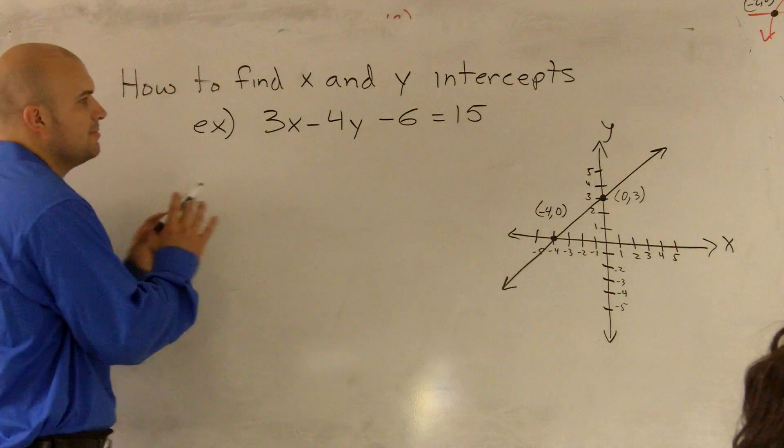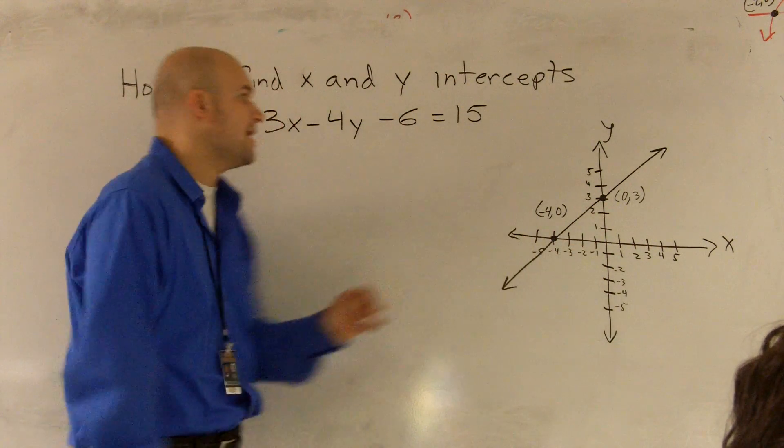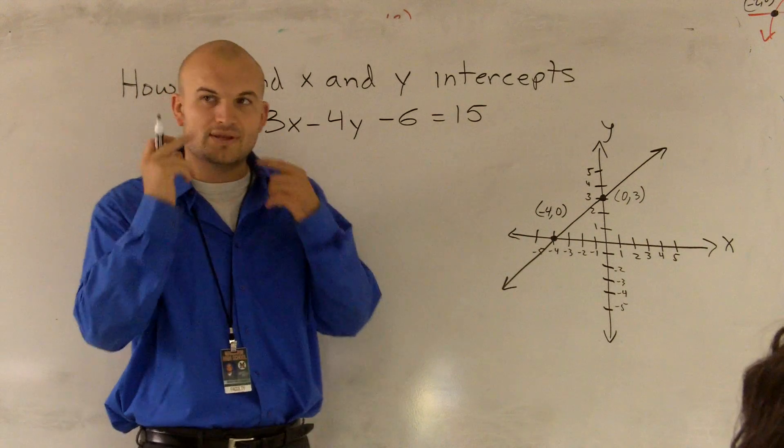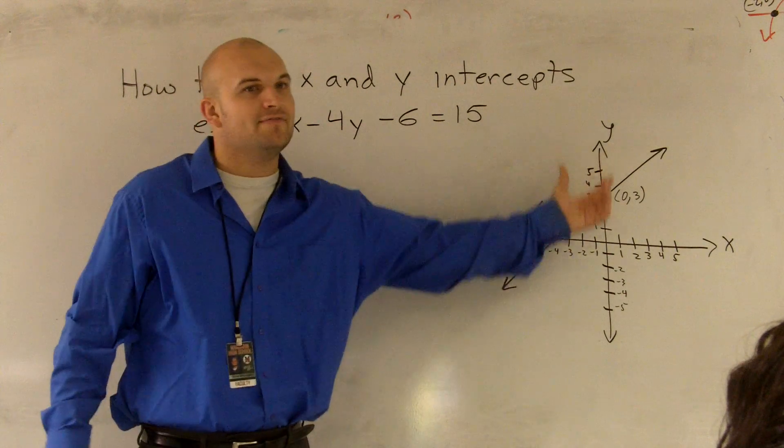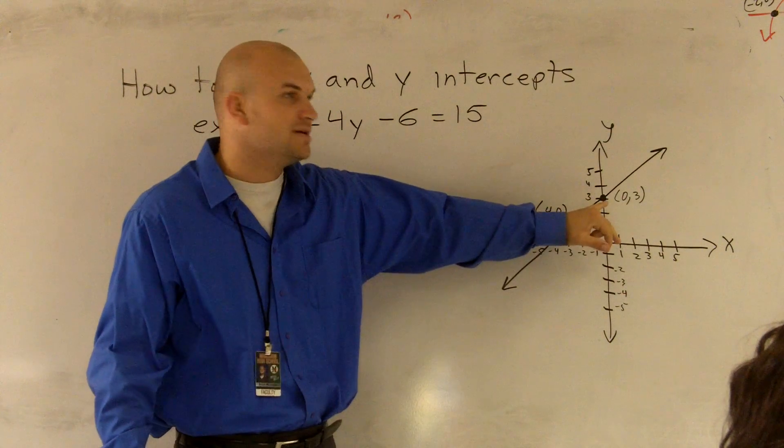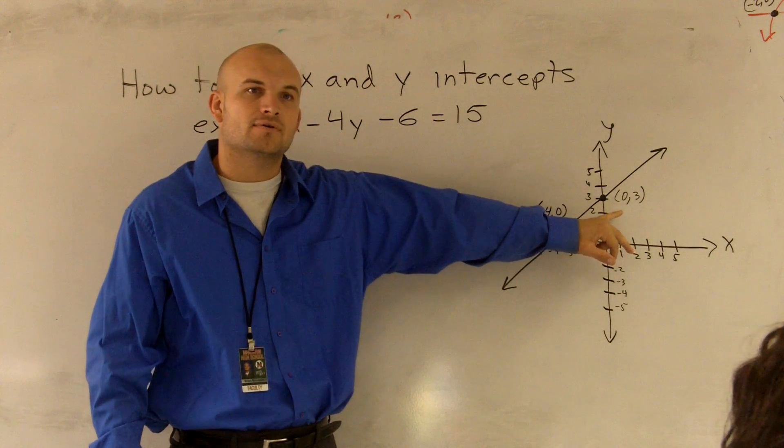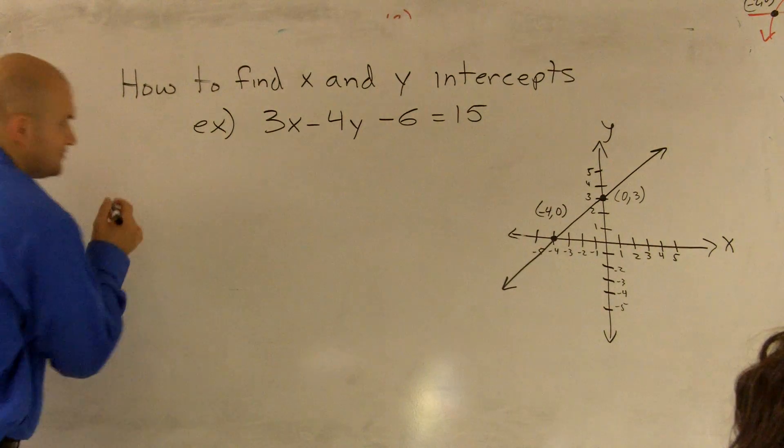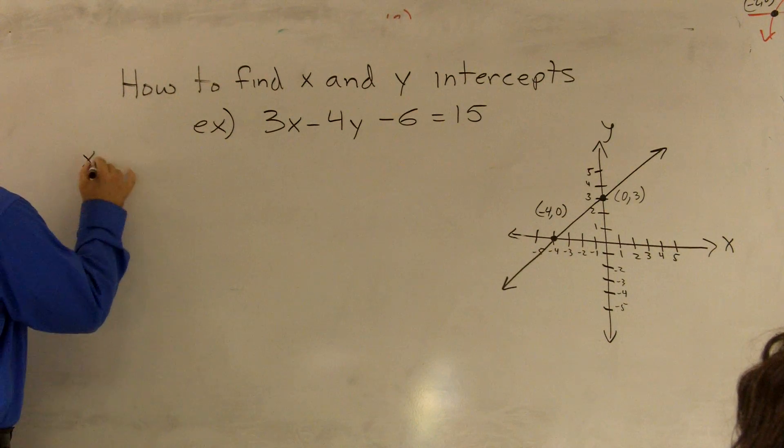So on my problem, if I'm not given a graph, I'm only given an equation, and it says find the x and y-intercepts. Without graphing my problem, the only thing I know is that at the x-intercept, I have a y-value of 0. So let's first find the x-intercept.